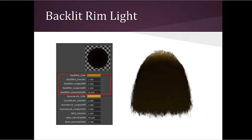The backlit rim is the highlight on hair when it's backlit. The controls for this rim light include color, intensity, longitudinal shift and width, and azimuthal width. For better viewing, the diffuse intensity has also been decreased.